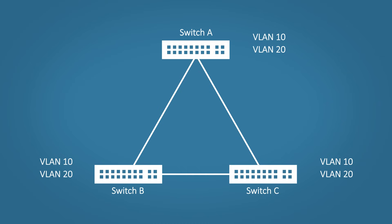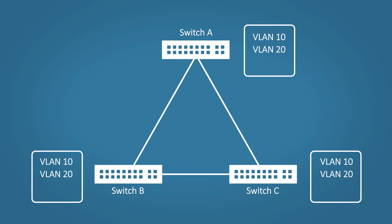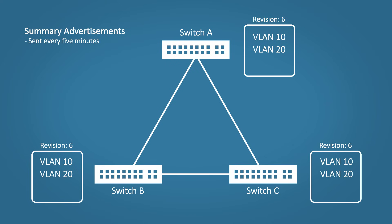Each switch will have its own VLAN database, and this database will have what's called a revision number. Each time the database changes — whether you add or remove a VLAN — the revision number will increase by one. The goal is to have every single switch running the same VLAN database with the same revision number. The way switches know they have the correct VLAN database is by sending out summary advertisement messages. These are sent out every five minutes by default and contain the VTP domain name, the VTP password, and the revision number.